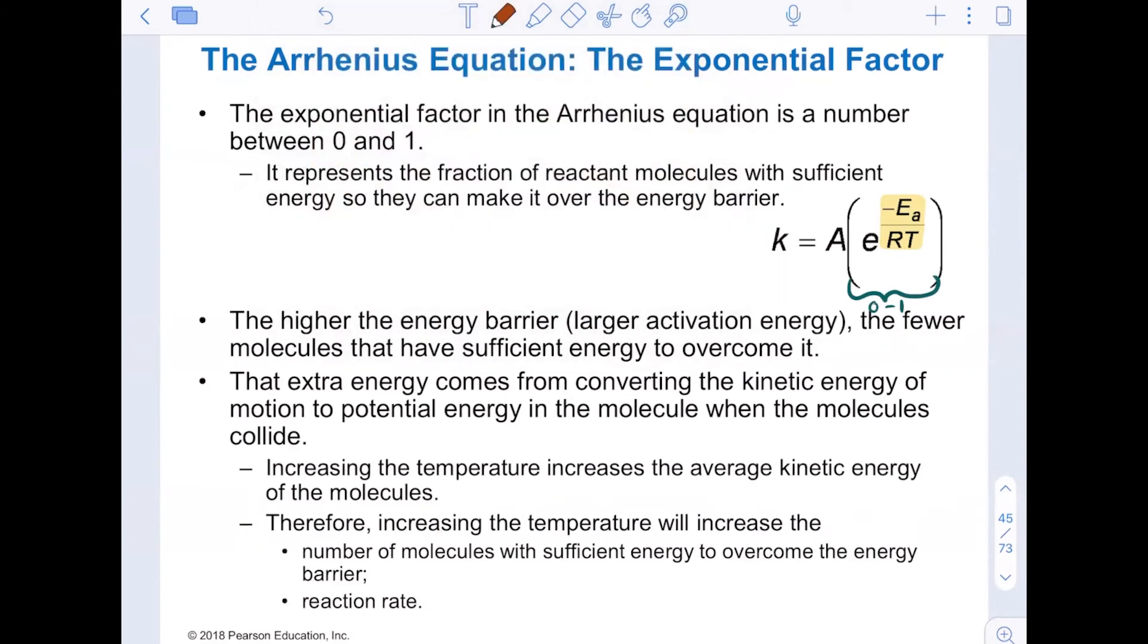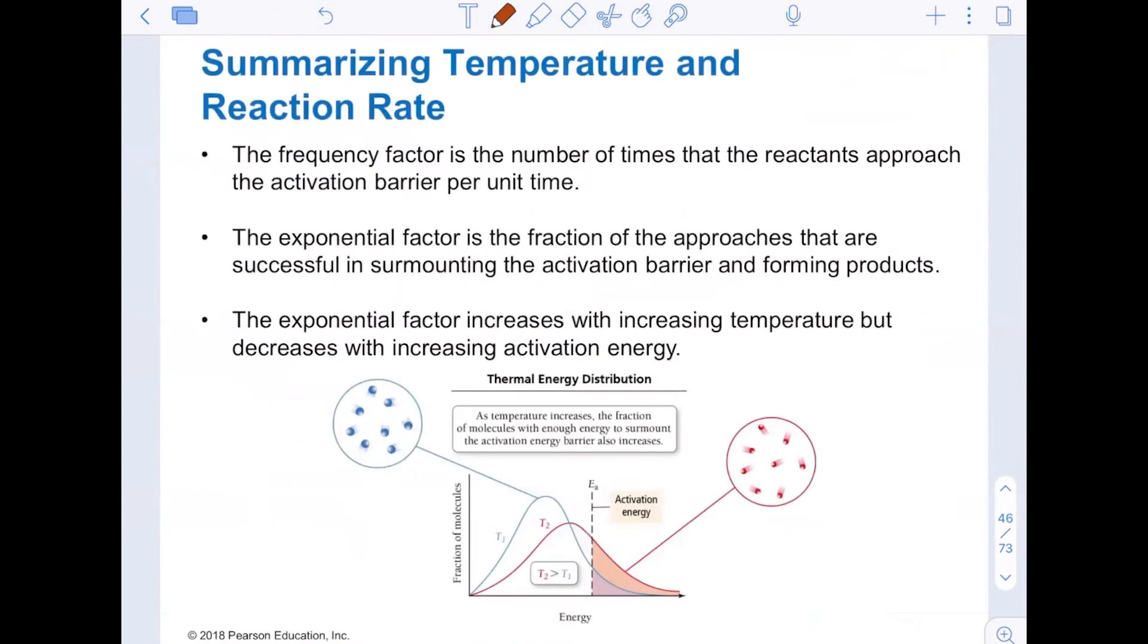Even if you have a very large activation energy, if you increase T, you are going to be increasing the rate of the reaction as well. All right, so the frequency factor is the number of times that a reaction, the reactants approach the activation barrier per time. The exponential factor is the fraction of those approaches that are successful. And so those are how the two are linked together. The exponential factor is what is affected by temperature.